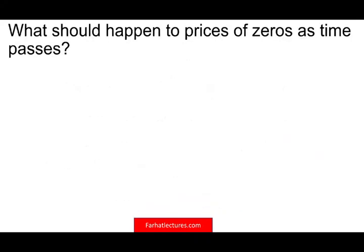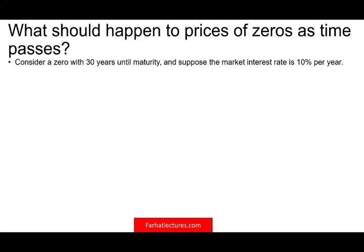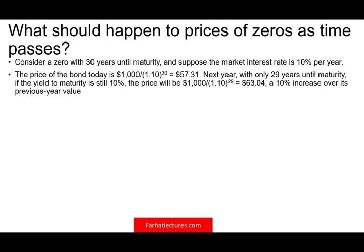What happens to a zero coupon bond as time goes by? Let's take a 30-year bond until maturity, and suppose the market rate is 10% per year. The price of the bond today is the present value of $1,000 discounted at 10% for 30 years, which equals $57.31. The following year, we discount $1,000 at 10% raised to the 29th power, because we still have 29 years remaining. Therefore, the bond went up in value from $57.31 to $63.04 — a 10% increase over the previous value.